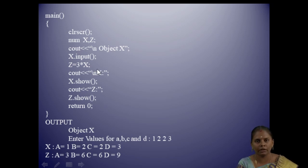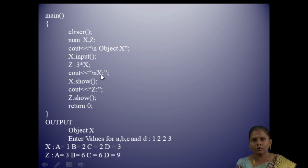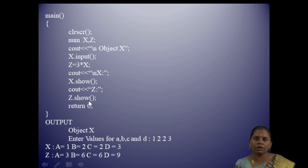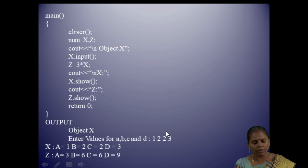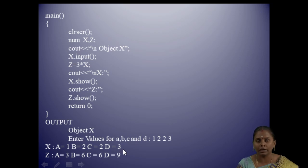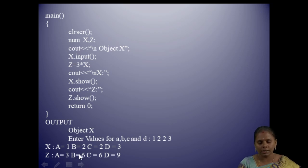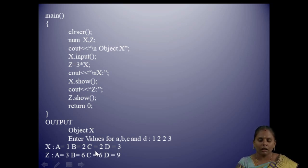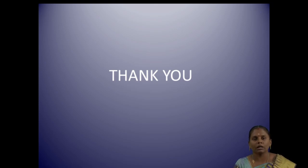The values passed for a, b, c, d of object x will be multiplied with 3. We then display using x.showoff() and z.showoff(). The output shows: for object x, values entered are a=1, b=2, c=2, d=3. After multiplication, z gives: a=1*3=3, b=2*3=6, c=2*3=6, d=3*3=9. That is all about operator overloading in C++. Thank you all.